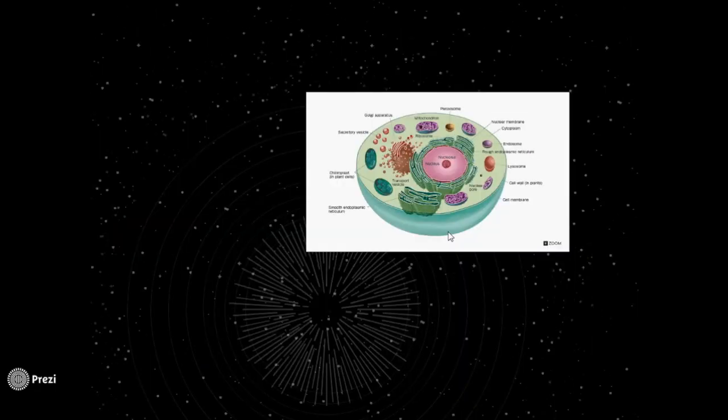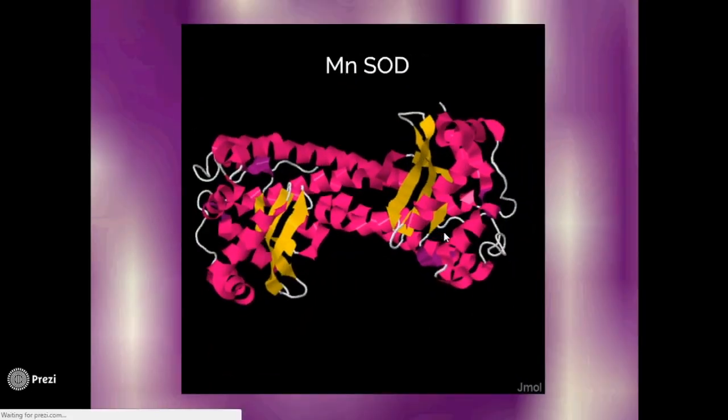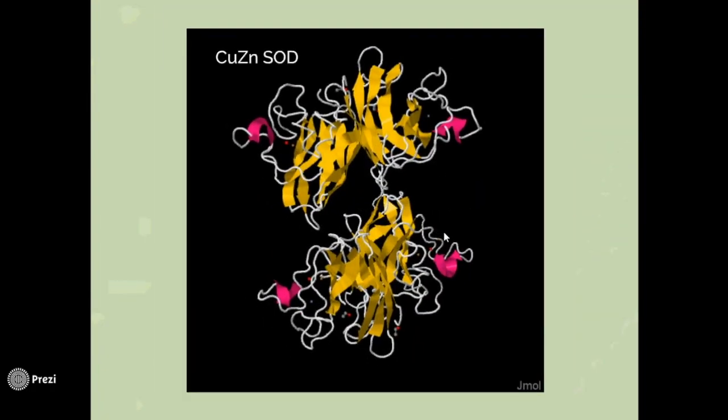Considering the entire cell, manganese superoxide dismutase in humans is found exclusively in the matrix of the mitochondria. Other superoxide dismutases are found in the cytosol of the cell or the extracellular space.